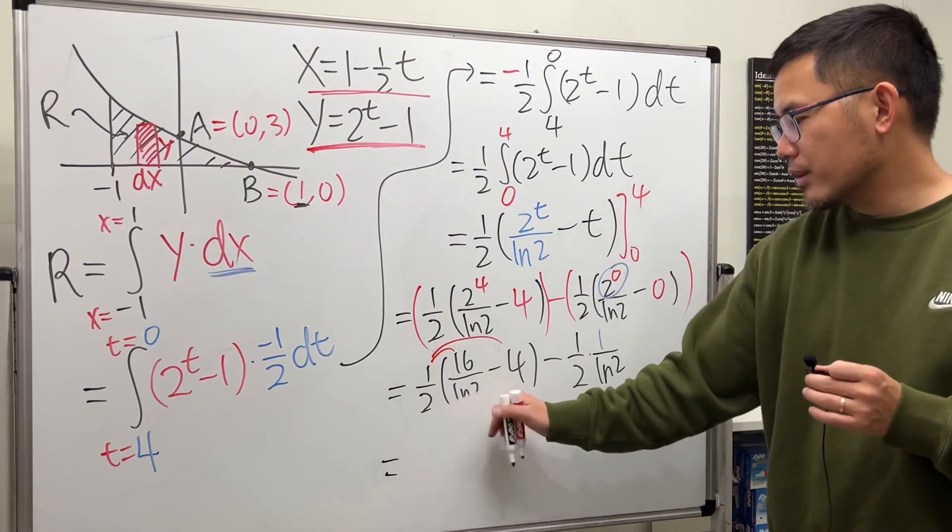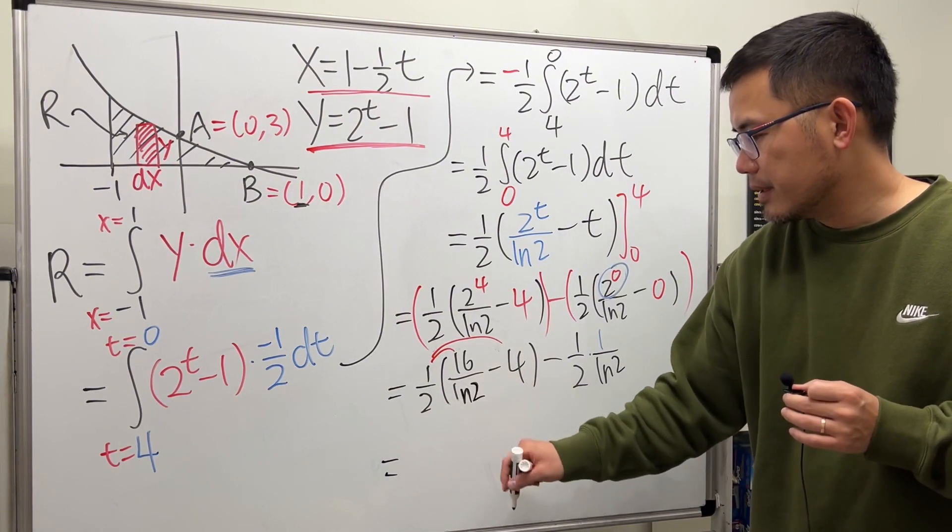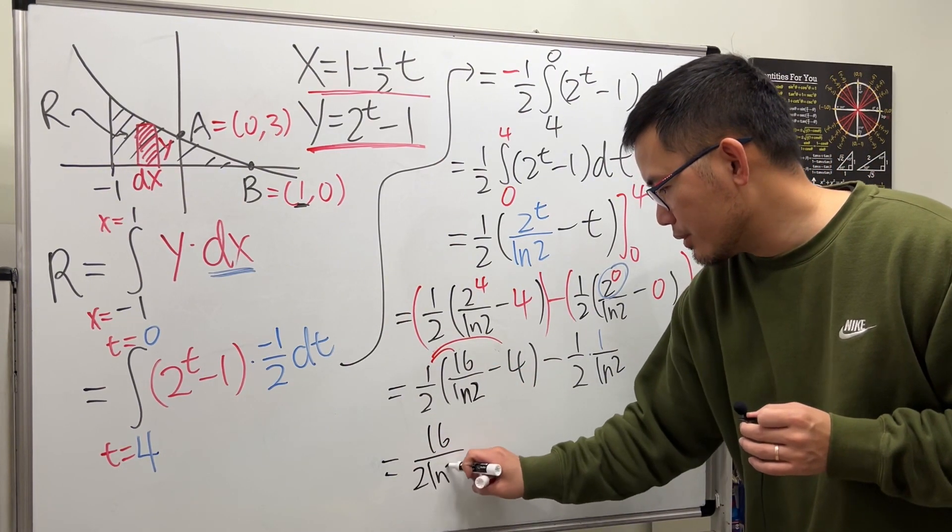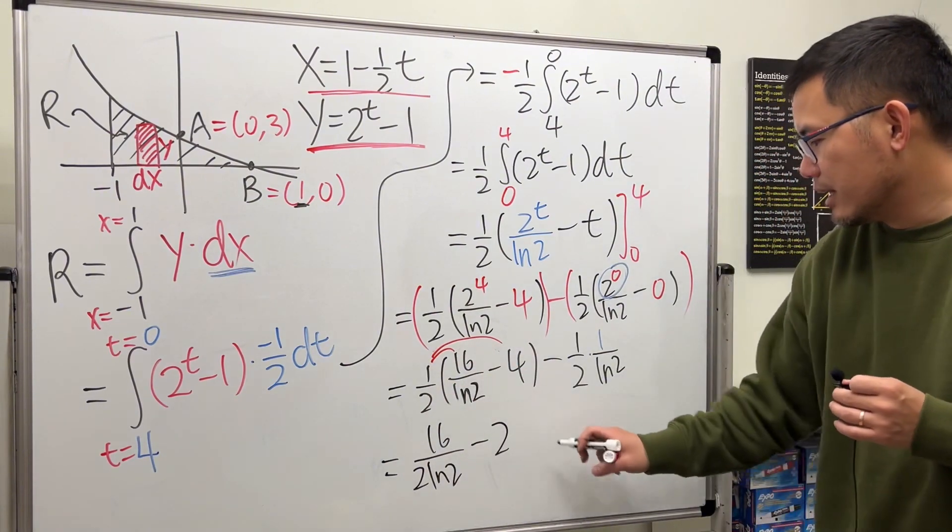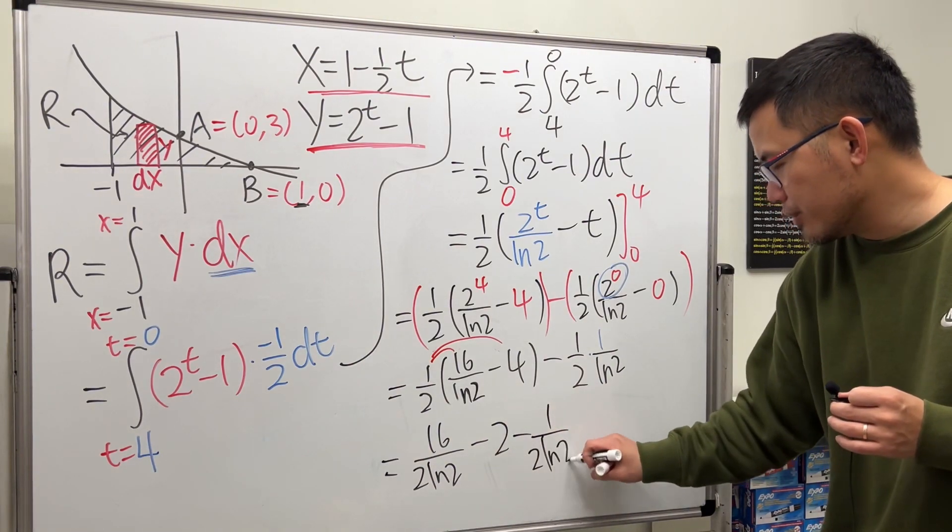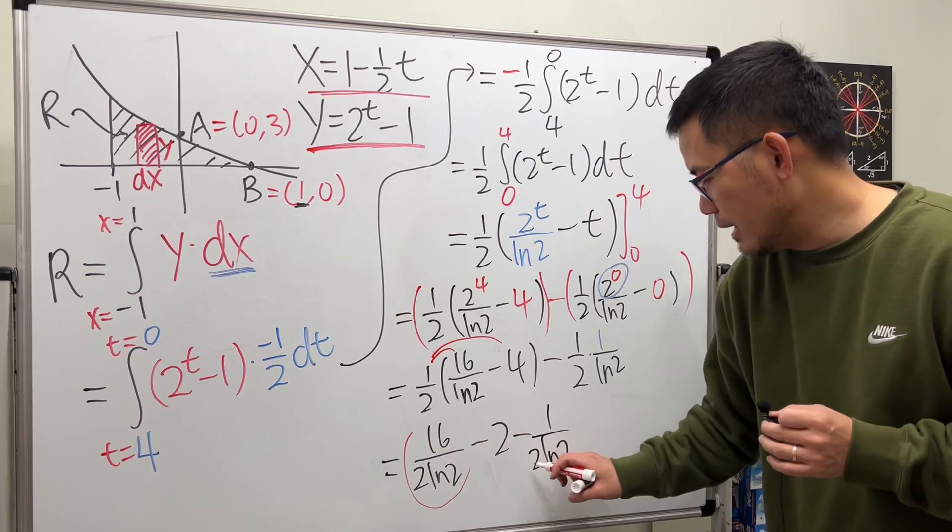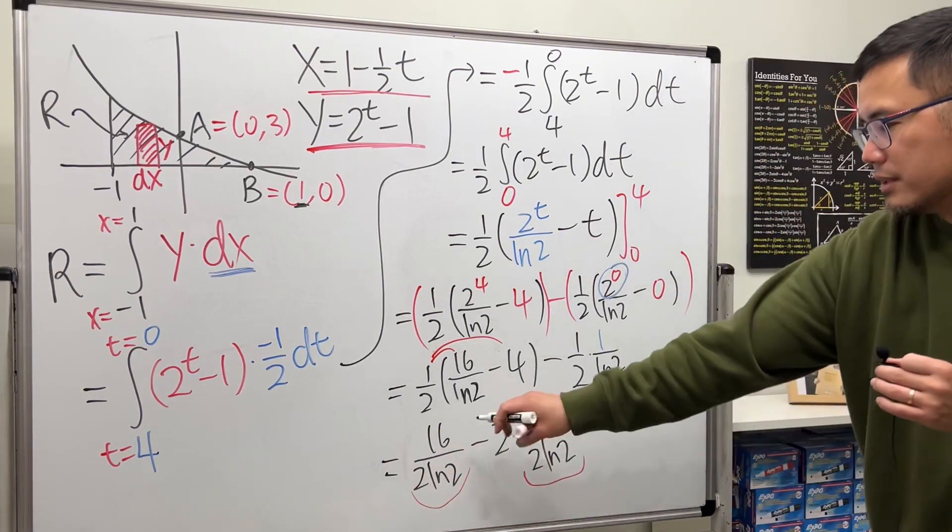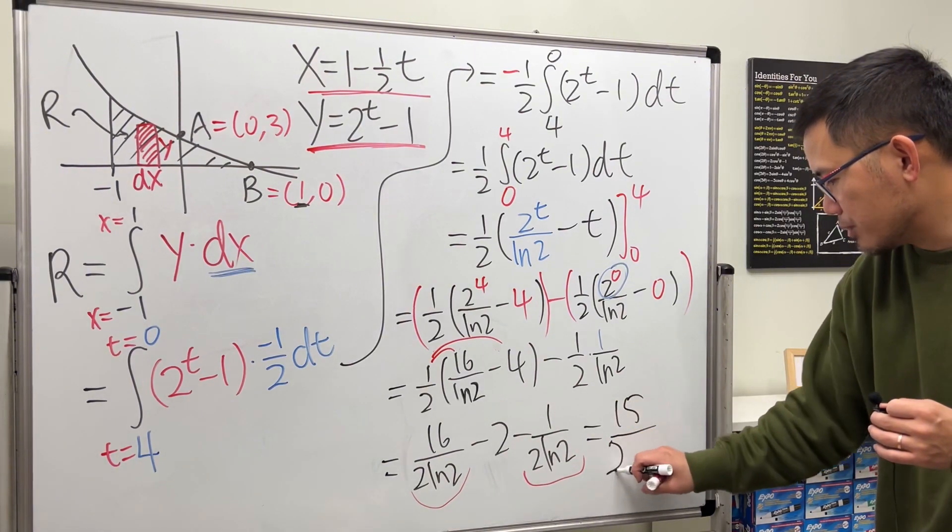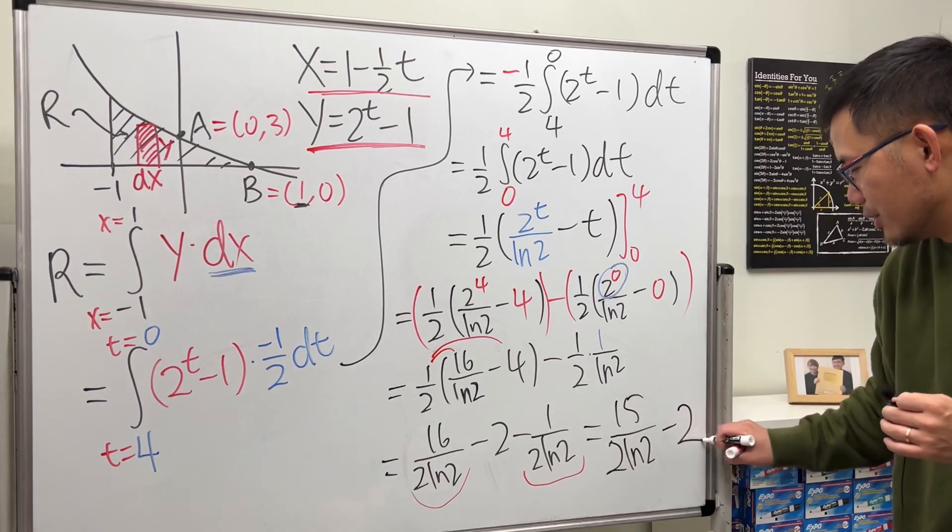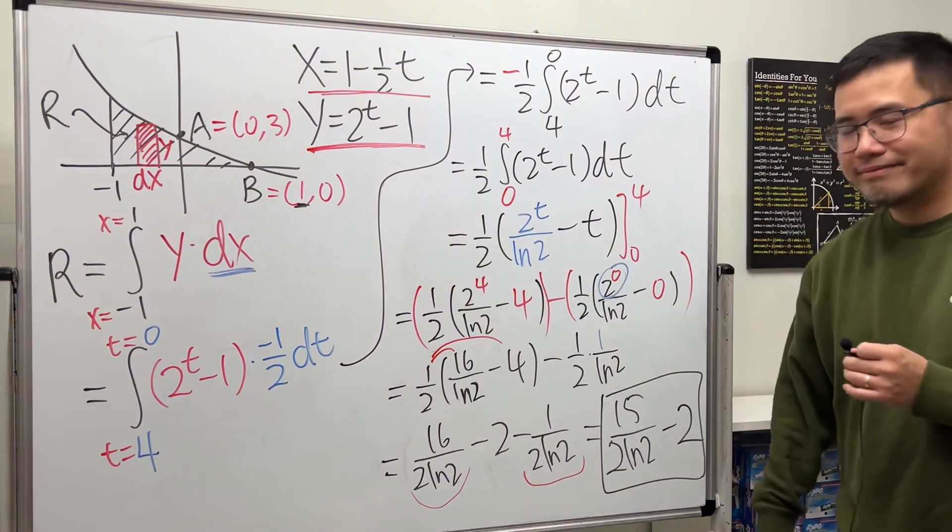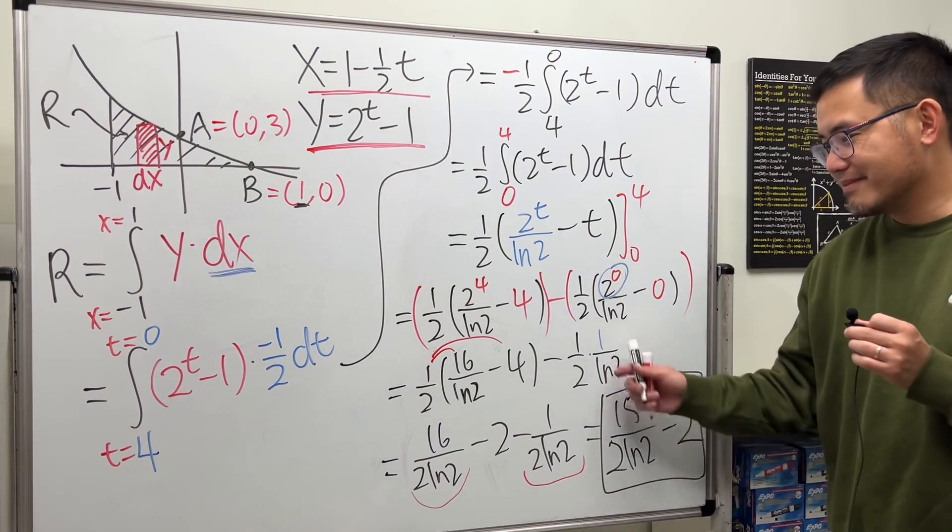Right here, I'm not going to reduce the 2 and 16. I will just write it as 16/(2ln2) and then minus 2. The reason is because this is minus 1/(2ln2). So combining this and that, 16 minus 1, we get 15 over that denominator. So I will just put it as 15/(2ln2), and then finally minus 2. This right here is the final answer for that. Hopefully it helps. Now you can try the other question. That's it.